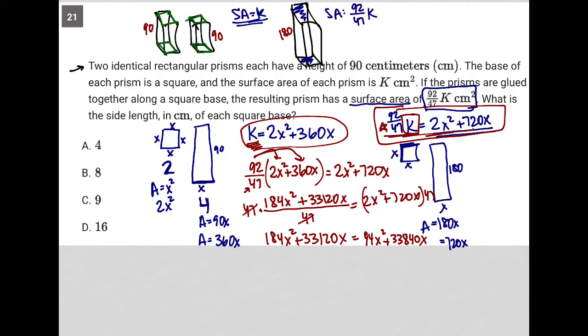Now we just have a bunch of like terms to combine. So I'm going to subtract 94x squared. I'm also going to subtract 33,840x from both sides.